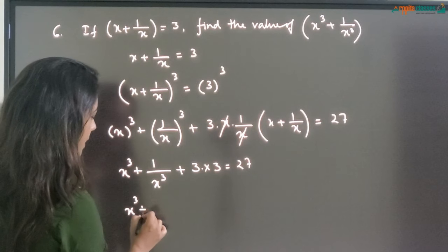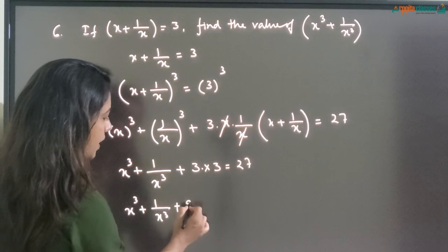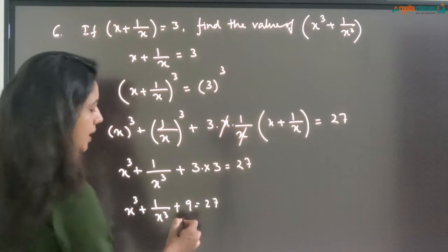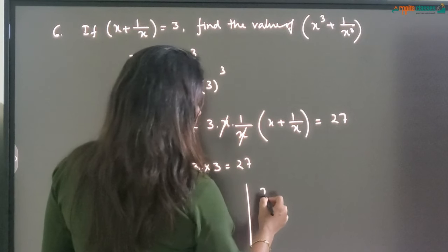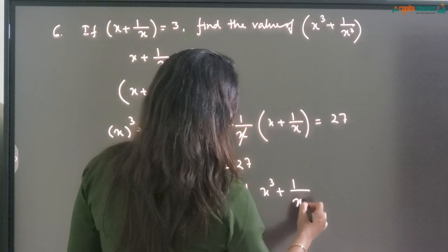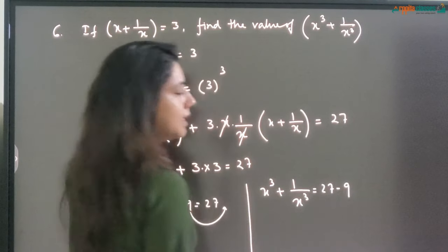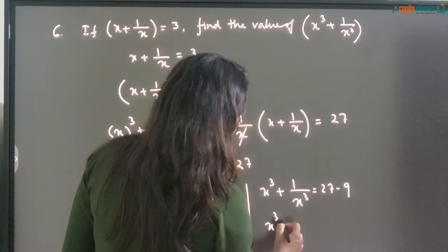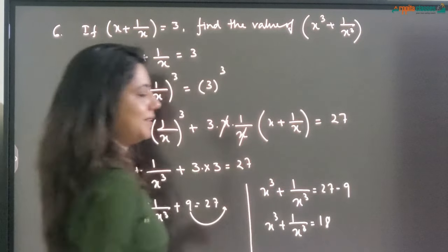So it will be X cube plus 1 upon X cube plus 9 is equal to 27. Getting 9 to the other side, X cube plus 1 upon X cube is equal to 27 minus 9, and 27 minus 9 is 18. So X cube plus 1 upon X cube is equal to 18.